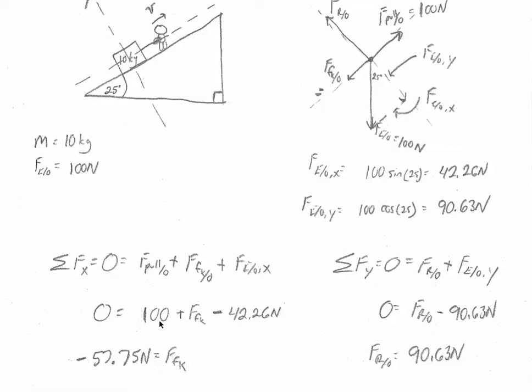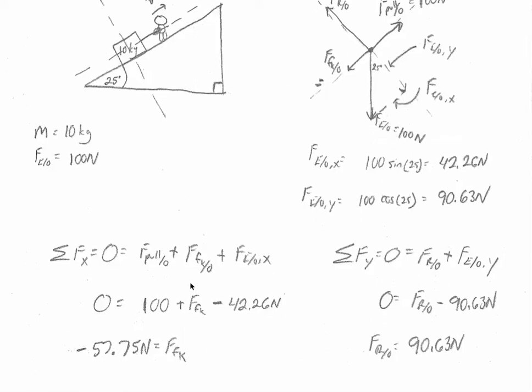Substituting in what we know, we have zero equals 100 newtons from the pull force plus the force of kinetic friction we don't know that yet, and then we can subtract away 42.26 newtons due to the force of the earth on the object because it's pointing down the ramp and so it has a negative direction.